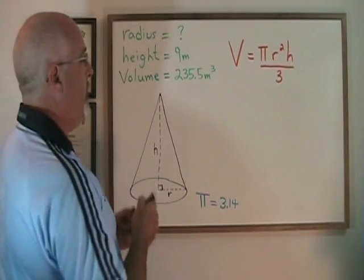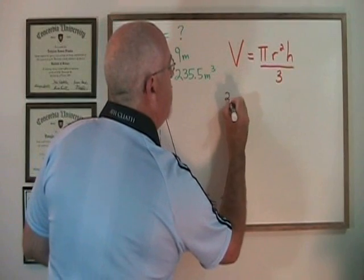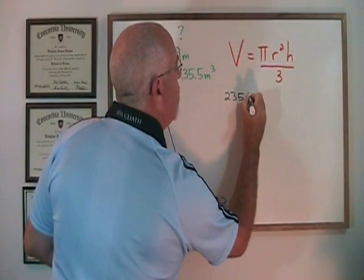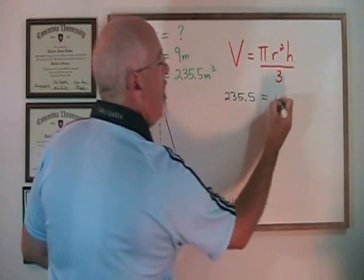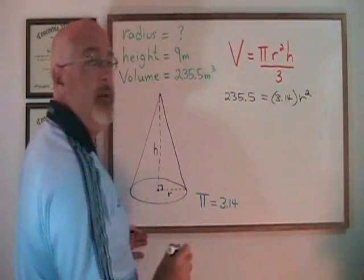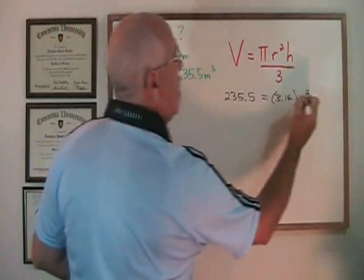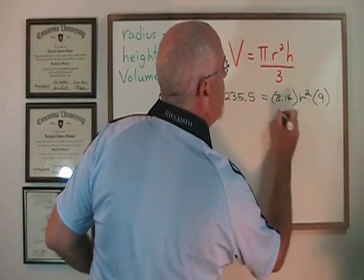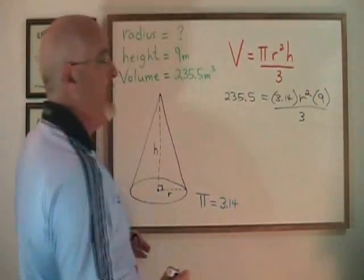Filling in the formula, the v is replaced by 235.5. Pi is replaced by 3.14. The r squared stays because it is our unknown. The h is replaced by 9. And we still have this 3 down here.